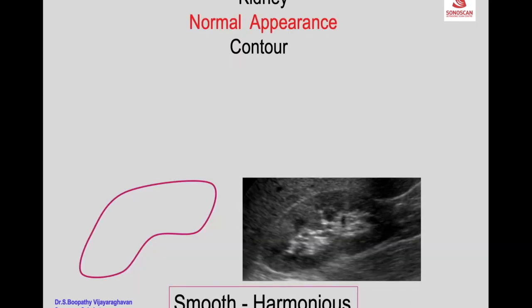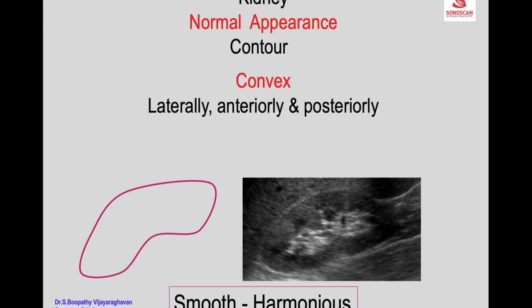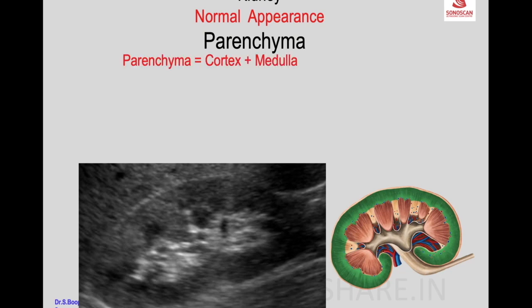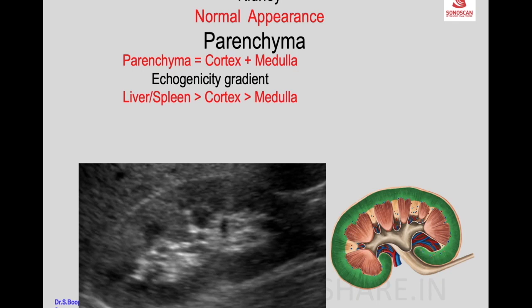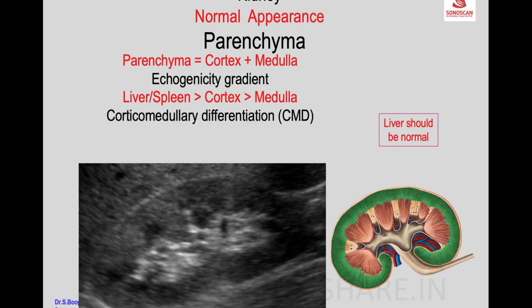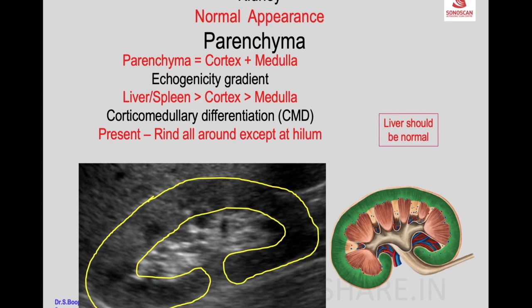The contour of the kidney is smooth and harmonious — convex laterally, anteriorly, and posteriorly, and concave medially at the hilum. The parenchyma contains both cortex and medulla; the medulla is seen as triangular echo-poor pyramids, more medial than the cortex. The cortex is less echogenic than the adjacent liver or spleen, and more echogenic compared to the medullary pyramids. This difference is called corticomedullary differentiation, which must be assessed to rule out pathology. The parenchymal rind is seen all around except at the hilum.